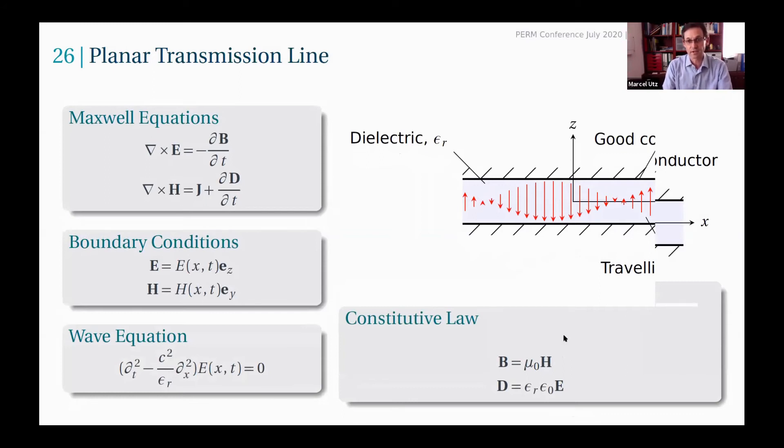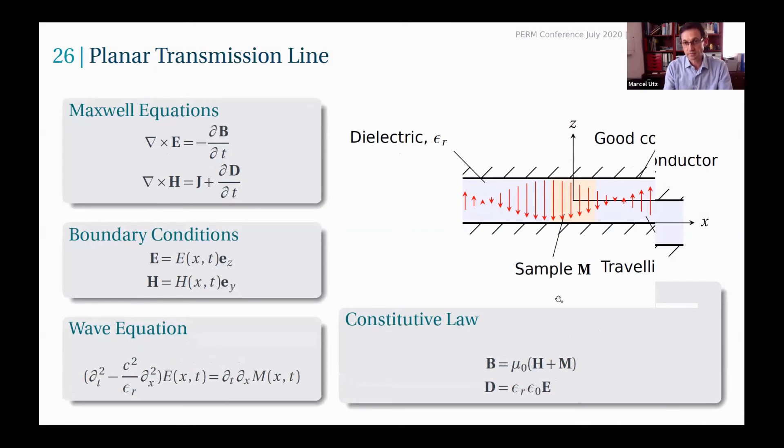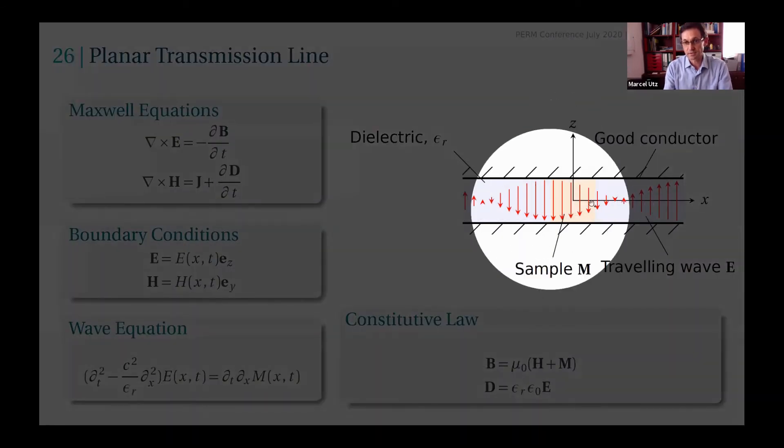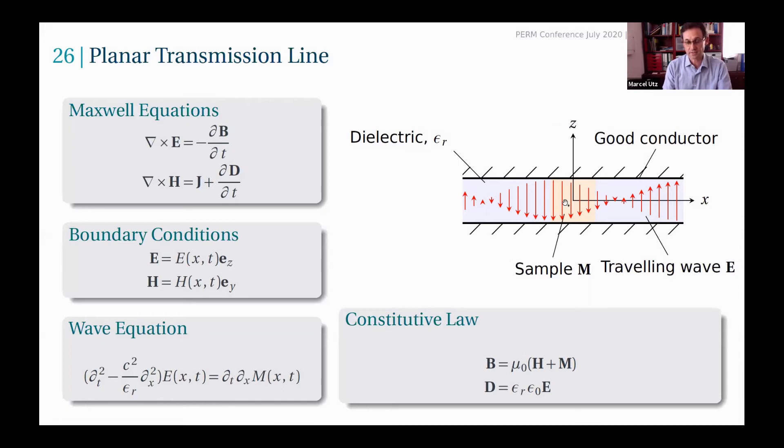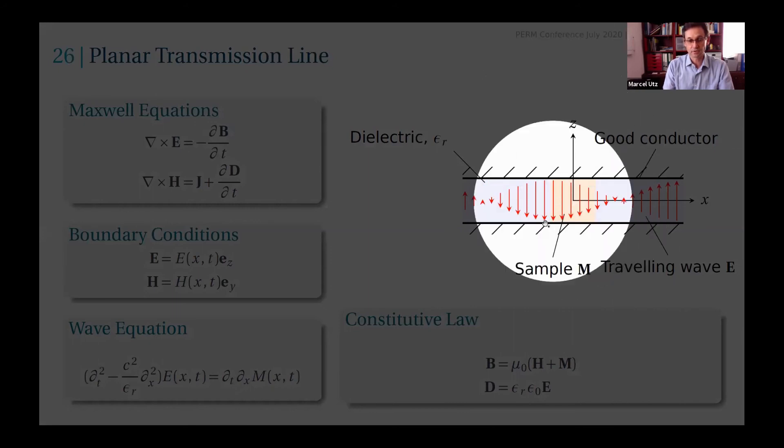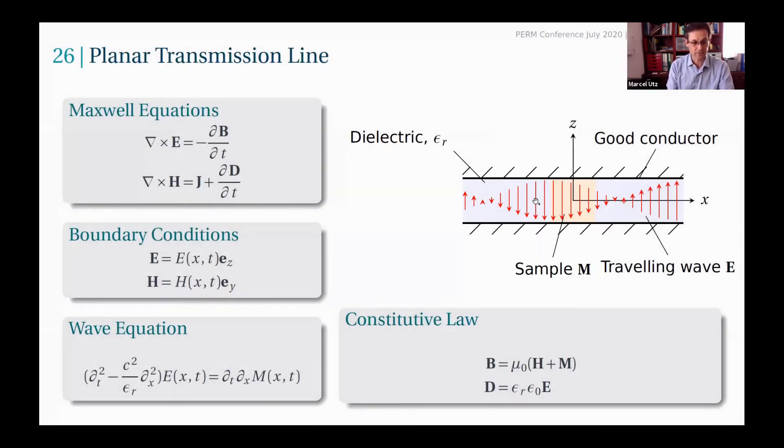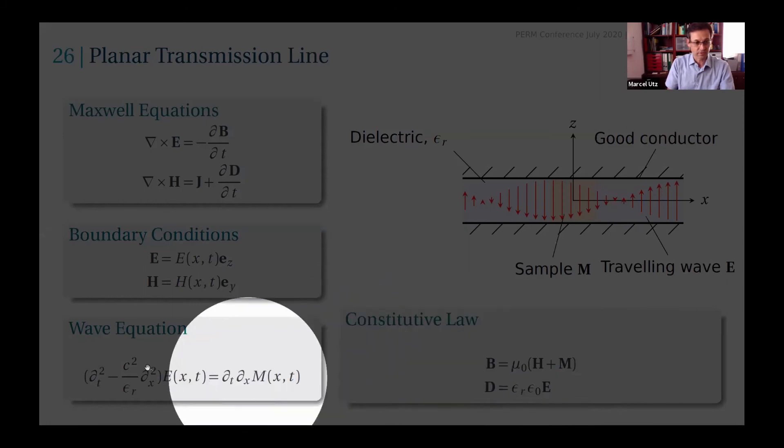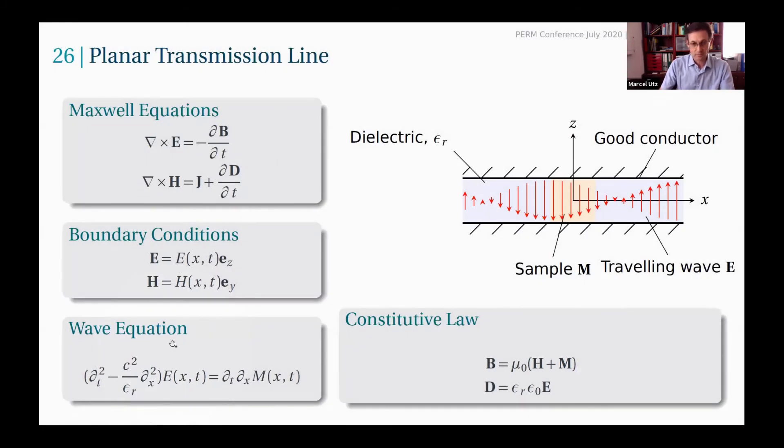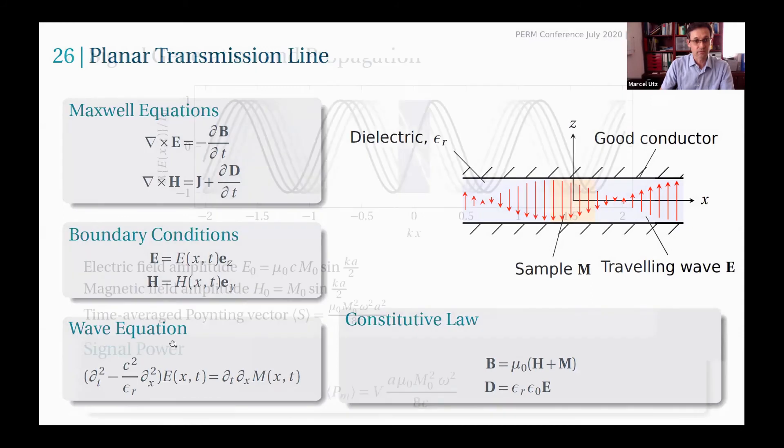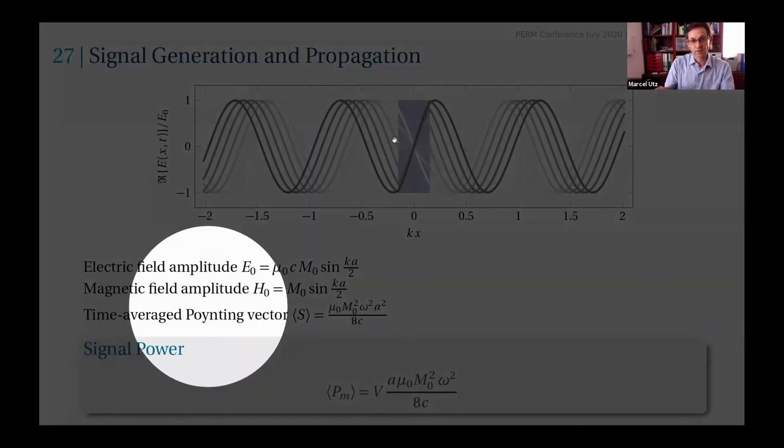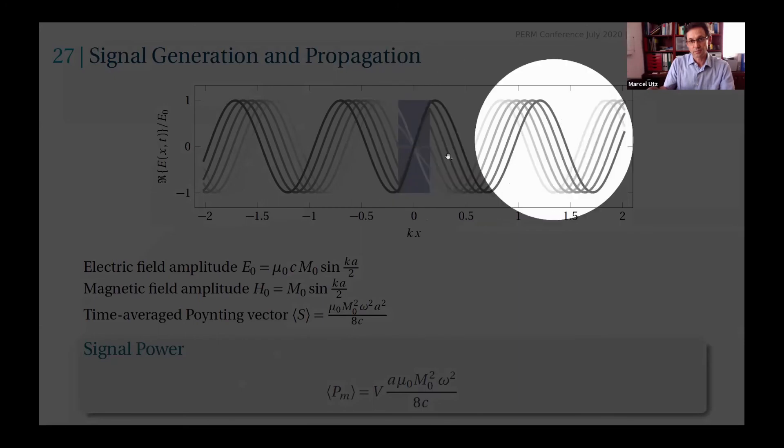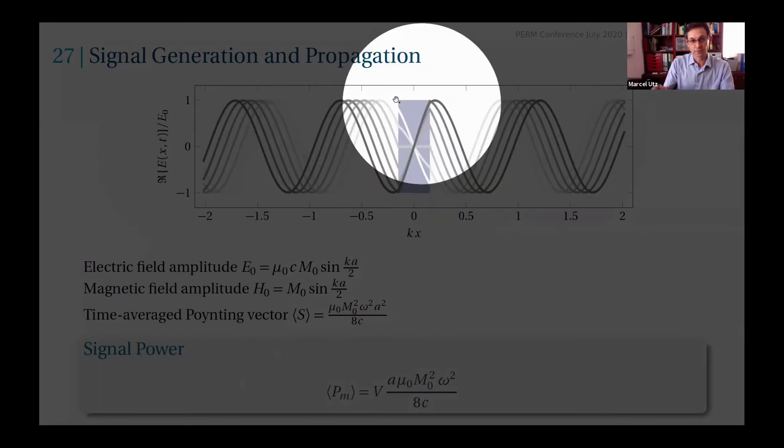If we put a sample here in the middle that contains nuclear spins, that represents a certain magnetization, and that magnetization can undergo Larmor precession if an external static magnetic field is present. That introduces a source term into this wave equation, and we can solve this very easily. One ends up with a situation where two electromagnetic waves travel away in this system from the sample.